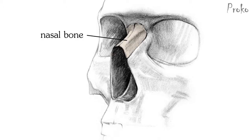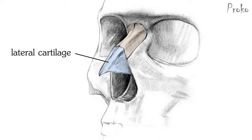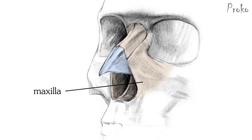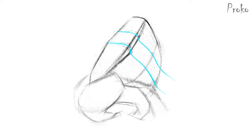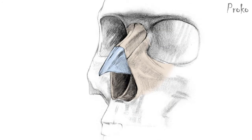The bridge. The top half of the bridge is the nasal bone, and the lower half is the lateral cartilage. The side plane is a bone called the maxilla. At the top, the nasal bone connects to the forehead at the glabella, which is a keystone-shaped plane that faces downward. The edge of the nasal bone and lateral cartilage has a thin, sharp ridge as it transitions to the side plane and connects to the maxilla. The lateral cartilage is pointy and wedges between the two pieces that make up the ball of the nose.